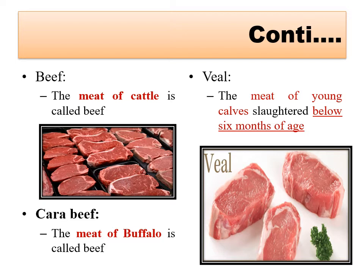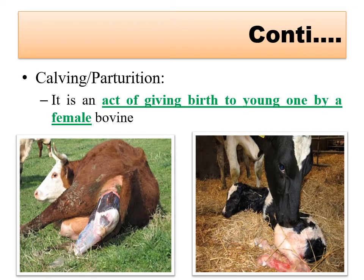For meat terminology: meat of cattle is called beef. Veal is the meat of young cattle slaughtered below six months of age - calves not older than six months. The meat of buffalo is called carabeef. So the three terms are: beef for cattle meat, veal for young calf meat, and carabeef for buffalo meat.